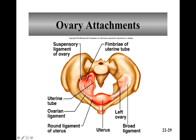The suspensory ligament is smaller and it just holds the superior end of the ovaries. It's also a place where blood vessels and nerves can pass through. And the ovarian ligament, which is actually part of the broad ligament but just a thickening there, holds the inferior end of the ovaries to the uterus.